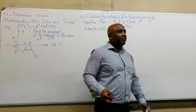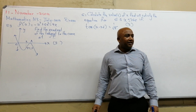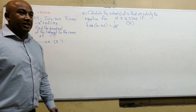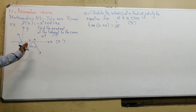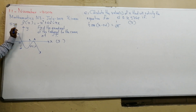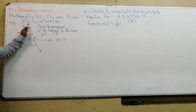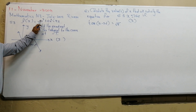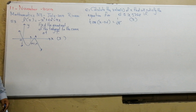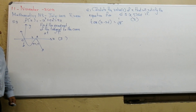We are back, continuing with question 5.3 — the last question on calculus. We are given a sketch: this sketch represents a cubic graph, and the equation of this cubic graph is minus x to the power 3 plus 6x squared minus 9x. The question is: find the gradient of the tangent to the curve.